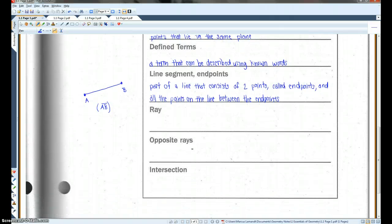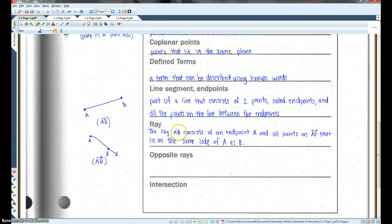All right. A ray. A ray basically goes on forever in one direction. Okay. I'll write out the formal definition here. The ray AB consists of an endpoint, A, and all points on line AB that lie on the same side of A as B. So a ray would look something like this. It's a little bit crooked, but imagine this was a straight ray.